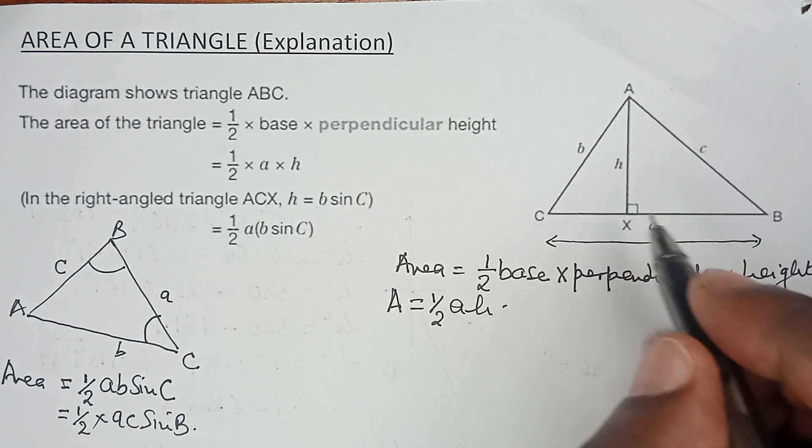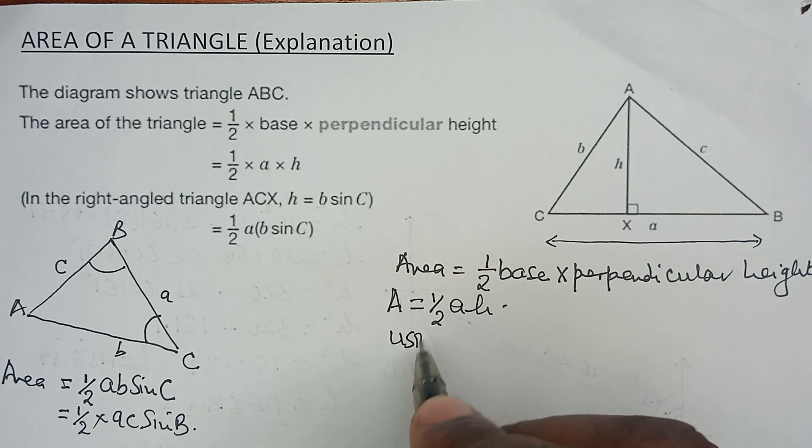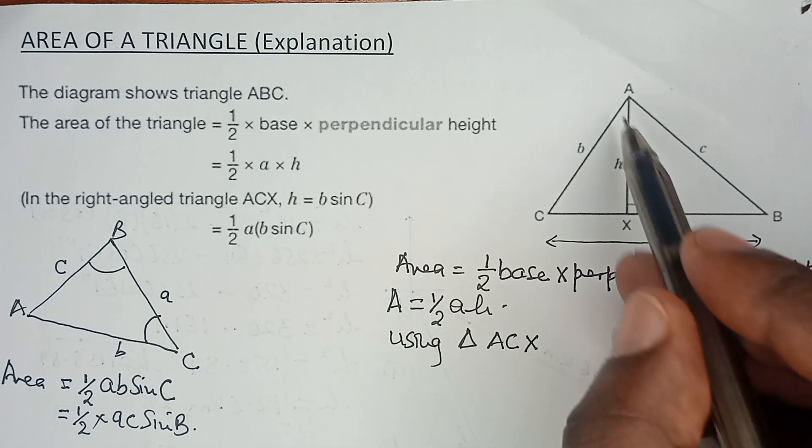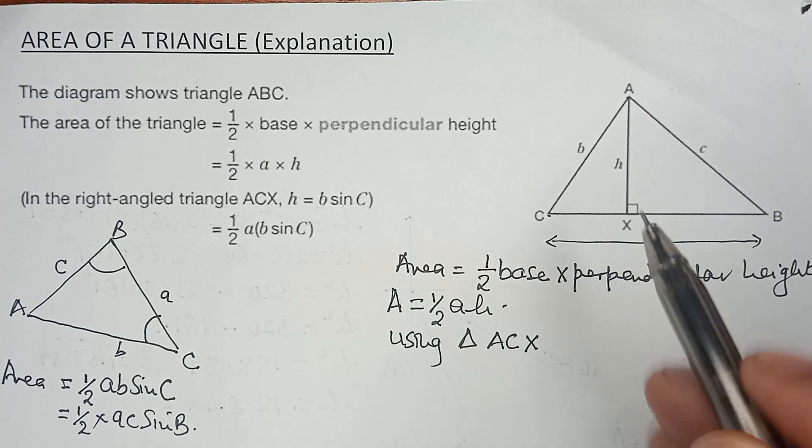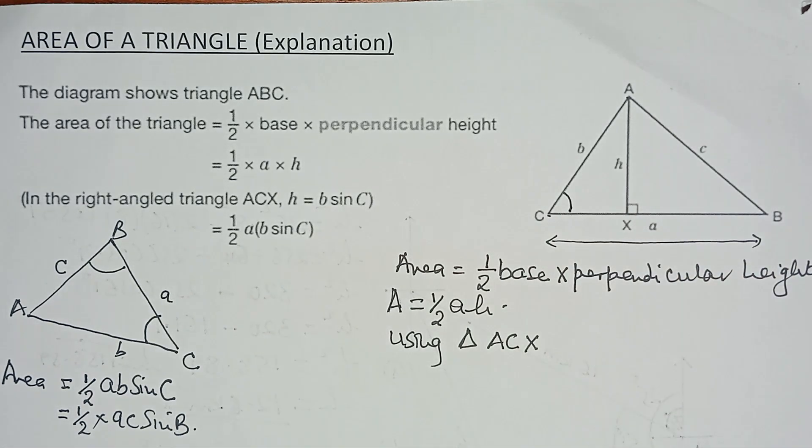...we would want now to use triangle A, C, X. It is a right angle triangle, this is angle C. Right angle triangle, we are allowed to use the trigonometric ratios...